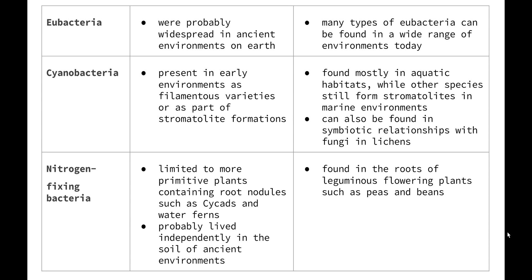The eubacteria also include chemosynthetic and heterotrophic forms that can survive in the absence of oxygen, and these, along with oxygen-dependent forms, were probably widespread in ancient environments on Earth. Many types of eubacteria can be found in a wide range of environments today. Fossil evidence has shown that the cyanobacteria, the first photosynthesizing organisms, were present in early environments as filamentous varieties or as part of stromatolite formations.